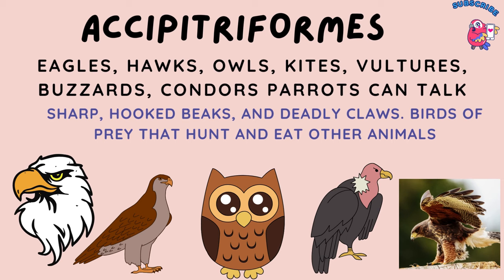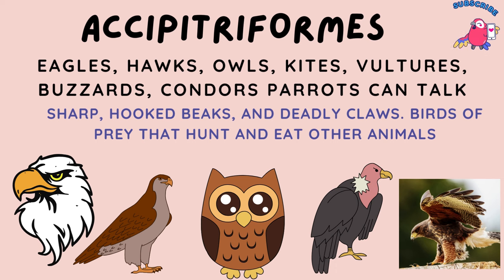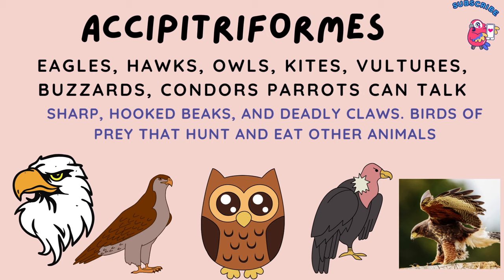Accipitriformes are birds that include eagles, hawks, owls, kites, vultures, buzzards, and harriers. They have sharp hooked beaks and deadly claws. These birds prey, hunt, and eat other animals.